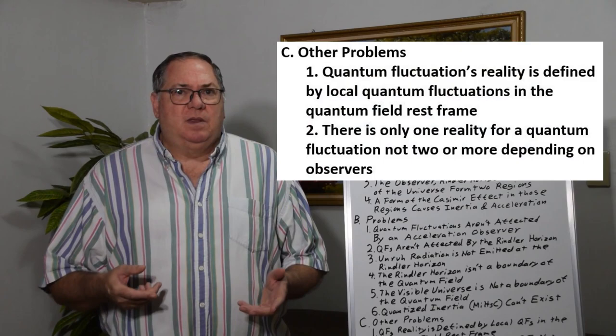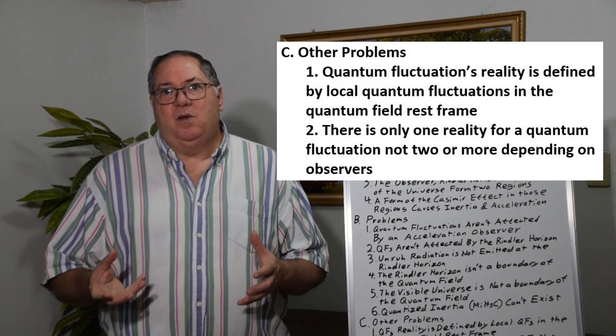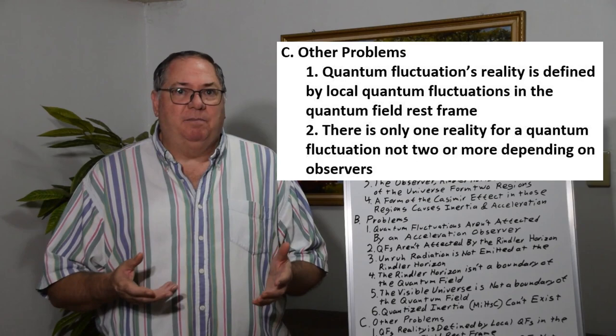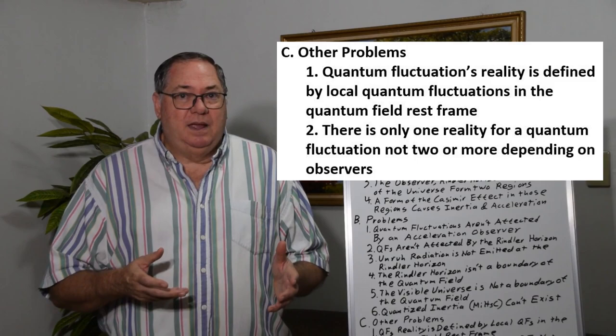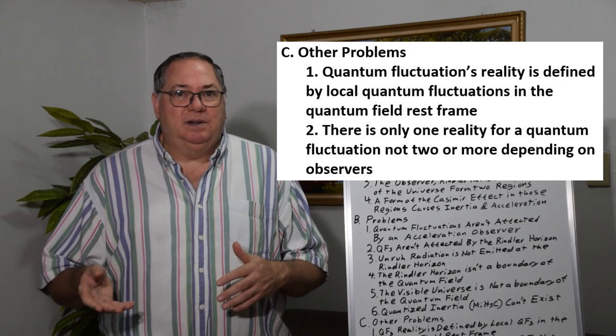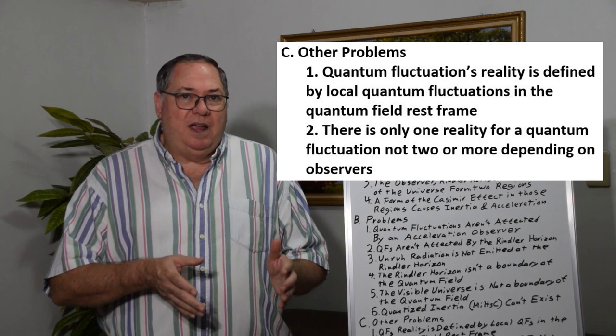The quantum field reality is defined by the local quantum fluctuations in the quantum field rest frame. This is one of the problems with how the Unruh radiation effect came about - if you assume there's no rest frame, then you have to treat every frame of reference as a separate reality, potentially.